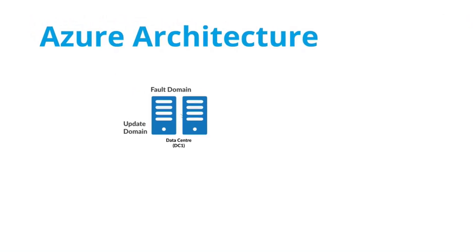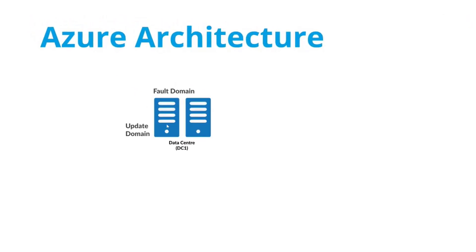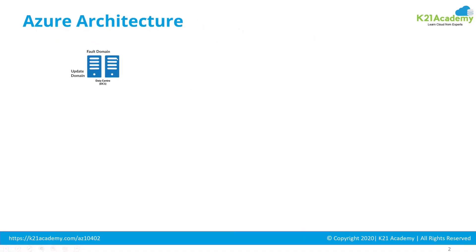Let's assume you have a set of server racks, and in those server racks you have multiple servers. Each server rack is called a fault domain. Within these server racks you have servers, which are update domains. So this is update domain 1, update domain 2, 3, and 4 within this fault domain. This is another fault domain with update domains 1, 2, 3, and 4.